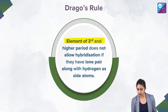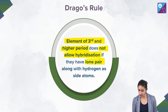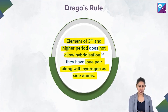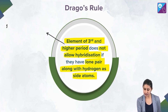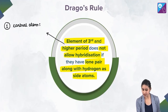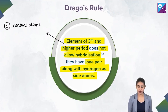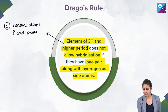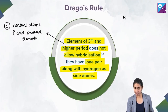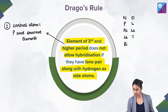The rule says elements of the third and higher period do not allow hybridization if they have a lone pair along with hydrogen as a side atom. Let's break it into three parts. First, we have the central atom — it should be a third period element or higher. You simply have to consider phosphorus and onward elements. Let me write the nitrogen family, oxygen family, and halogen family here.